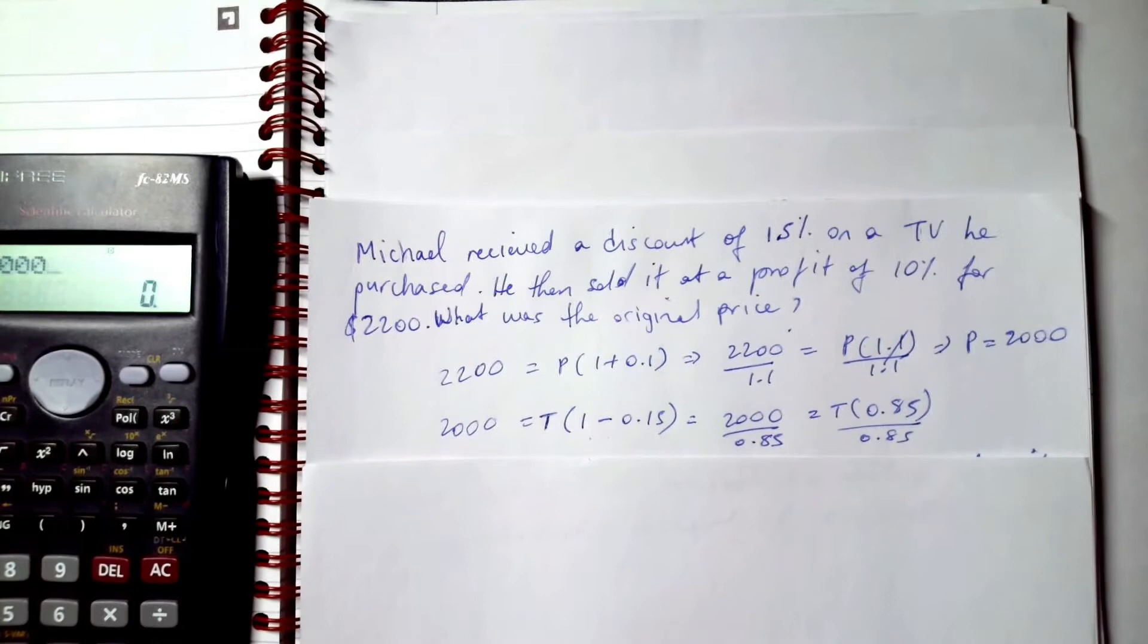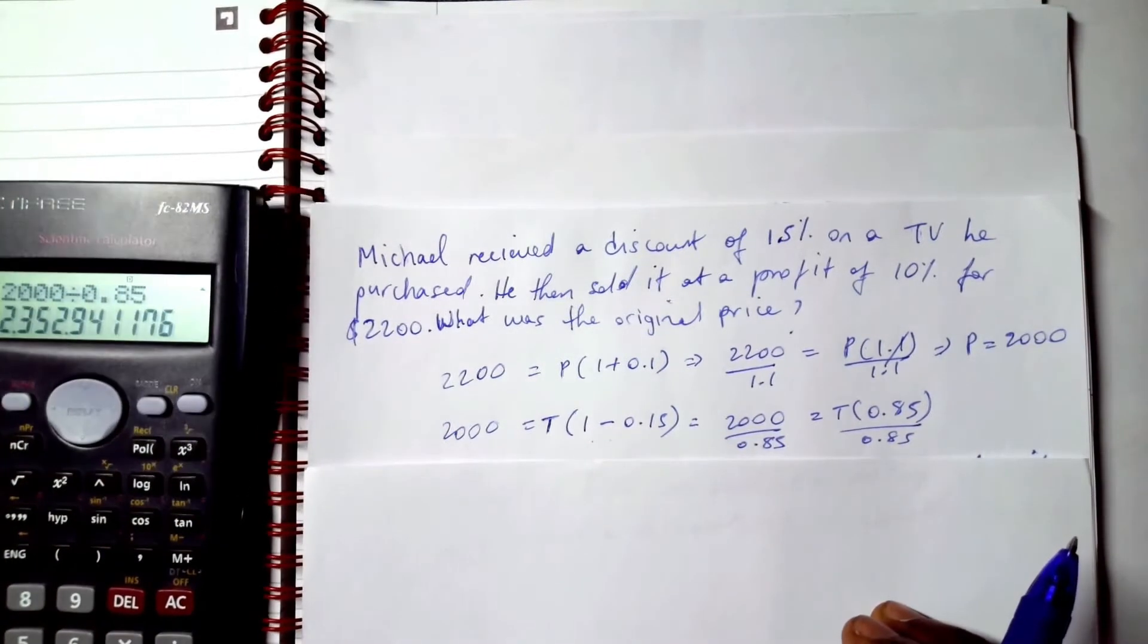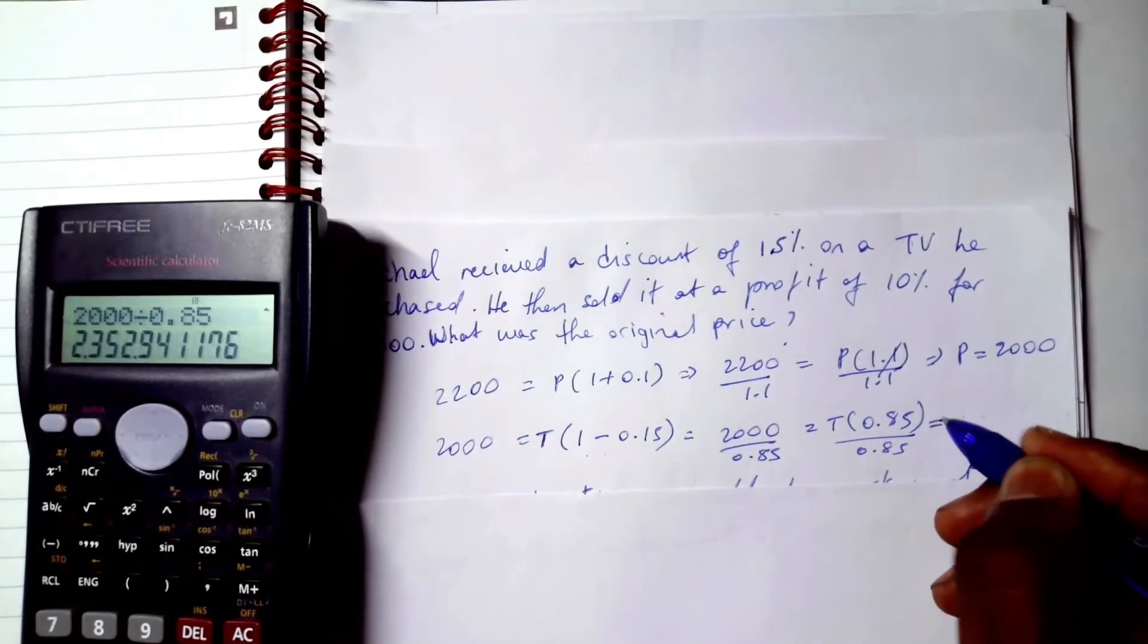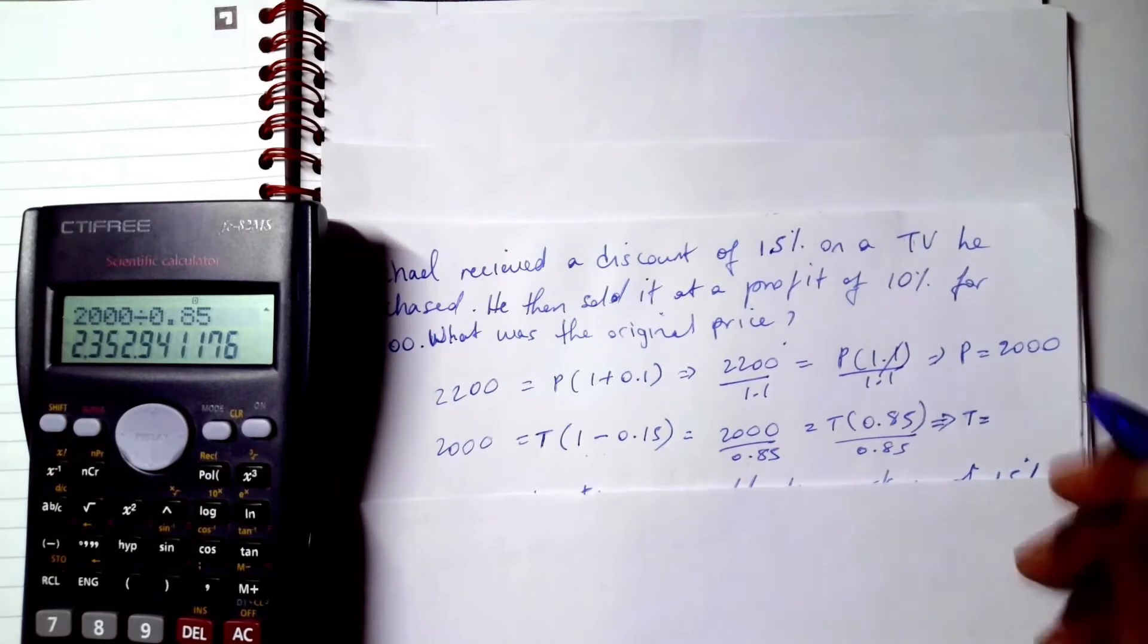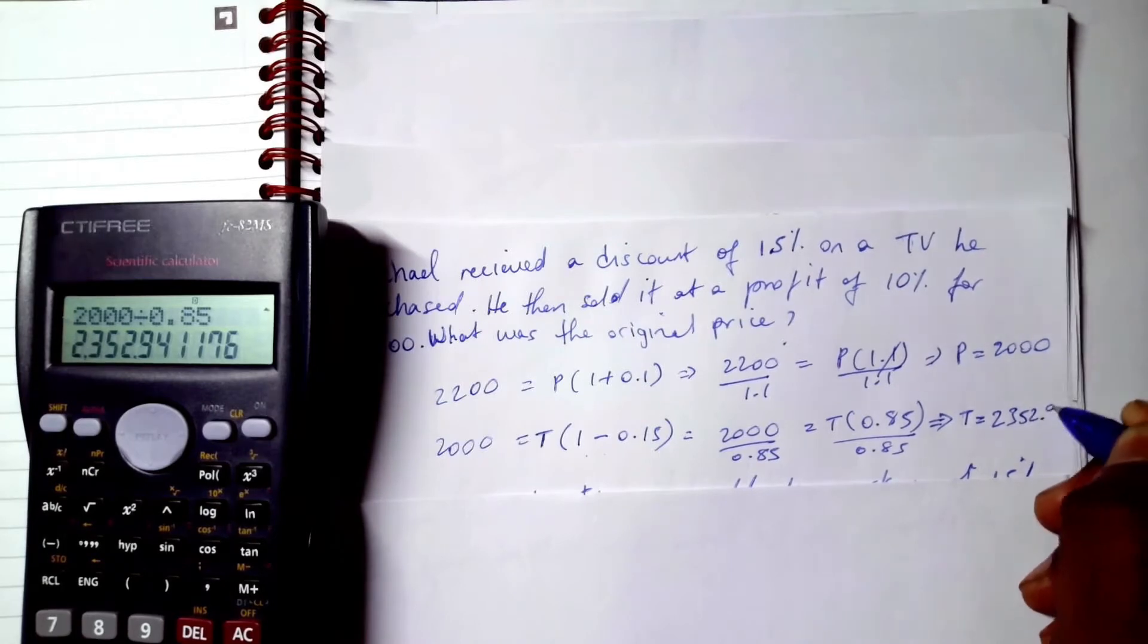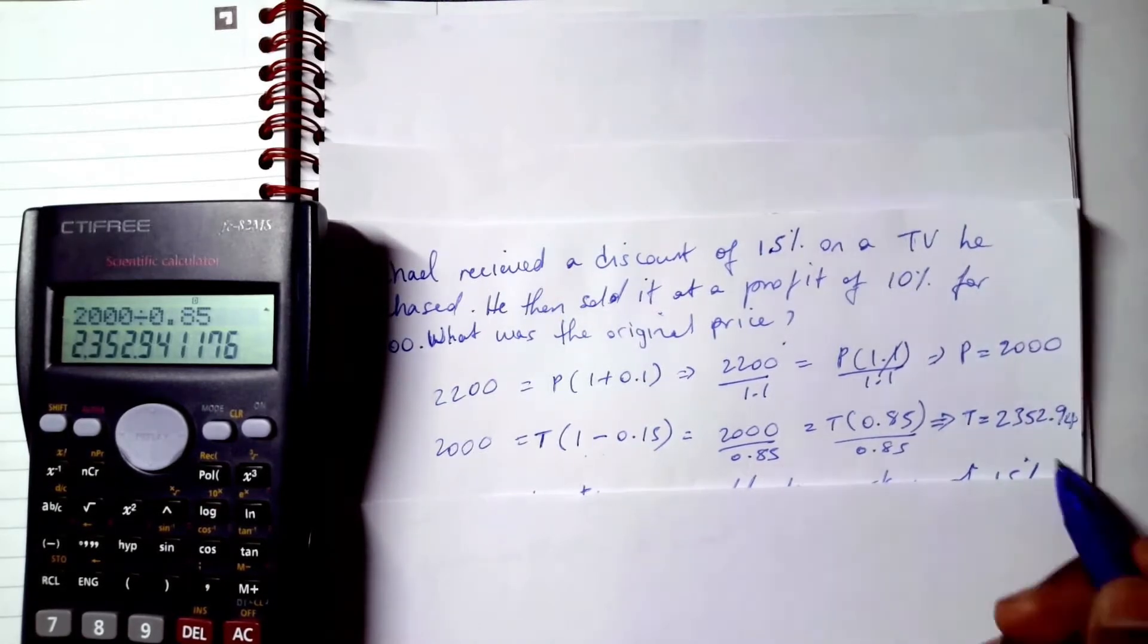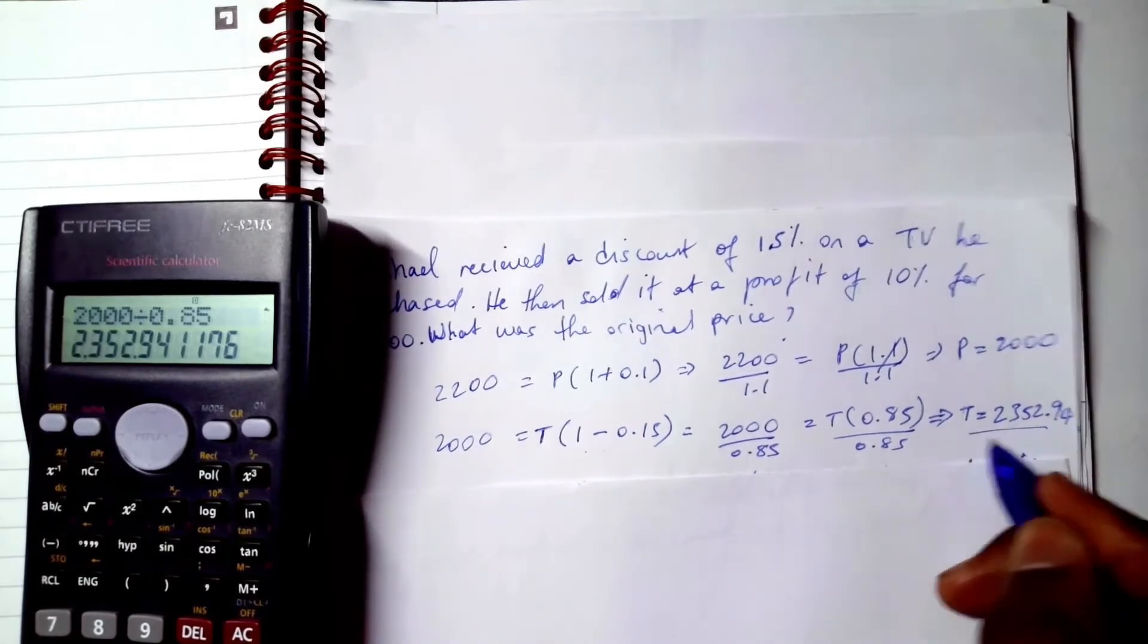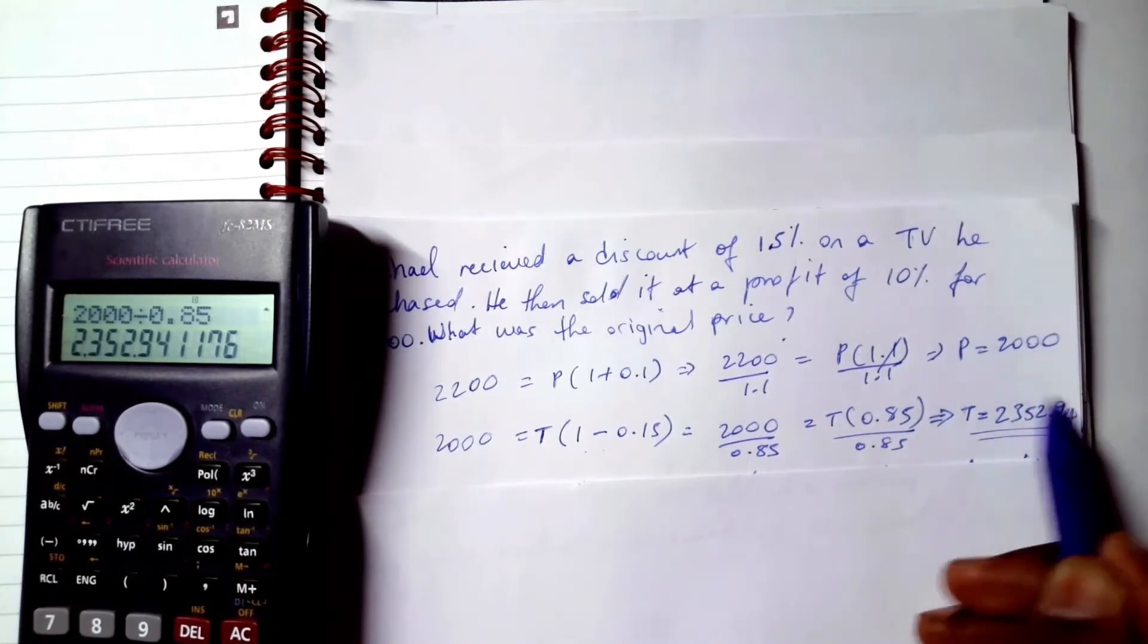We now divide 2000 by 0.85 and we get T = 2352.94. Sorry this is kind of untidy, however I'm sure you get the picture. So now this is the original price.